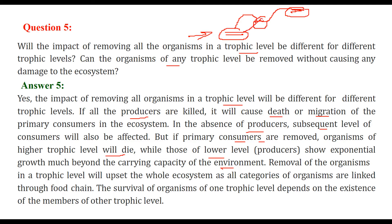There is a food chain, and the survival of organisms at one trophic level depends on the existence of members of other trophic levels.